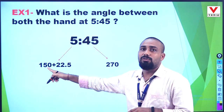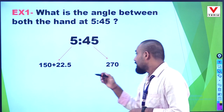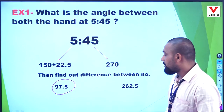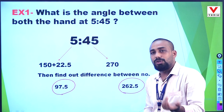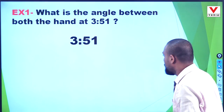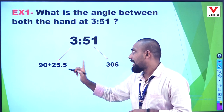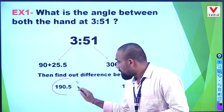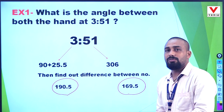For 5:45 — the hour hand: 5 times 30 equals 150 degrees, plus 45 times half equals 22.5 degrees, giving 172.5 degrees. The minute hand: 45 times 6 equals 270 degrees. The difference gives one angle of 97.5 degrees and the other of 262.5 degrees — the inner and outer angles. Then for another example, one difference is 190.5 degrees and the other is 169.5 degrees. Check your options and decide which is correct.